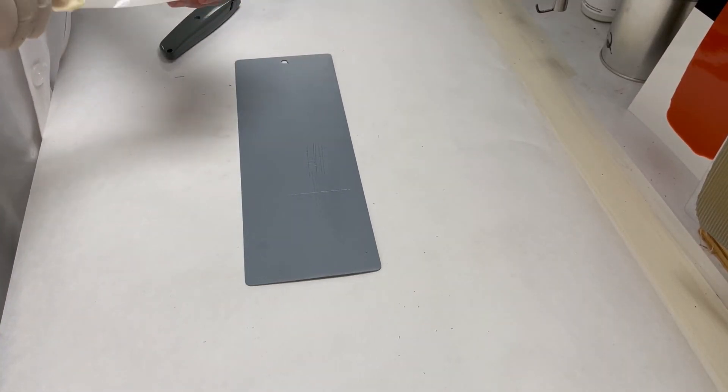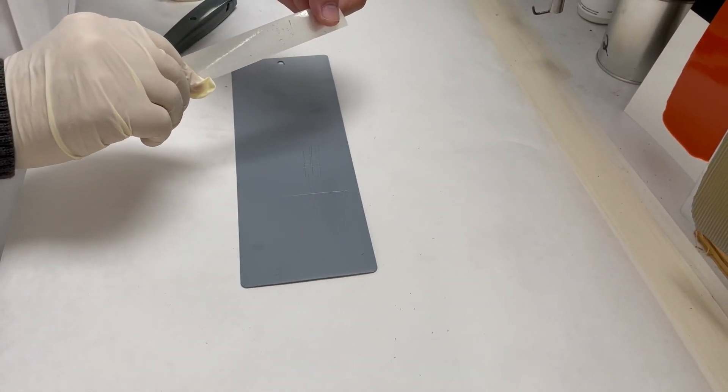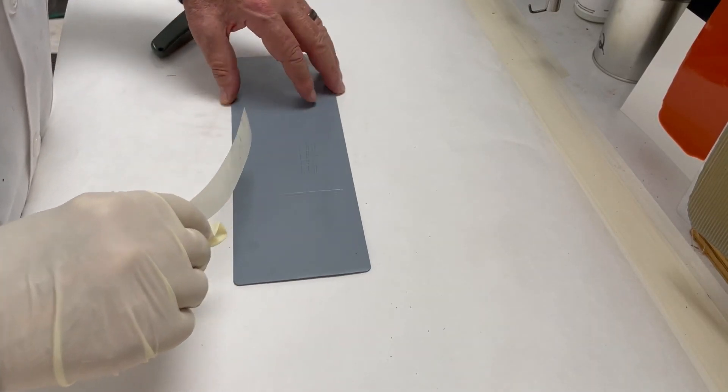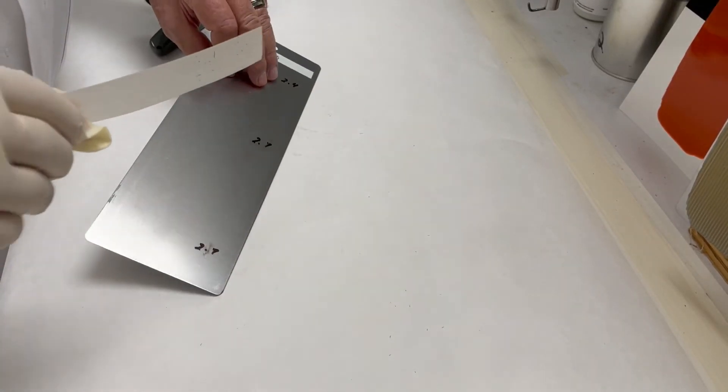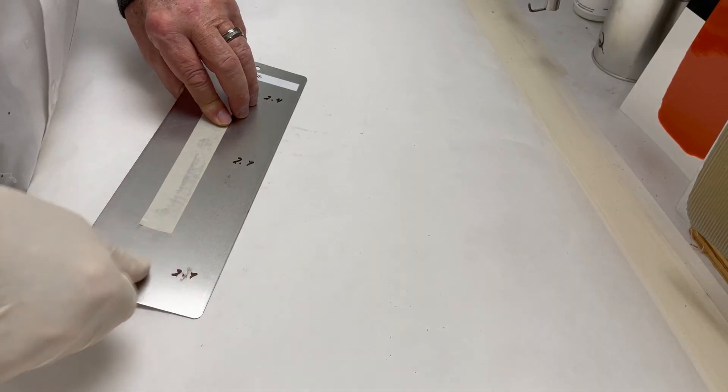Again, we're going to look at the tape, make sure no squares of paint came off. And as you can see, we didn't have any. So again, a 5B rating with the field method.